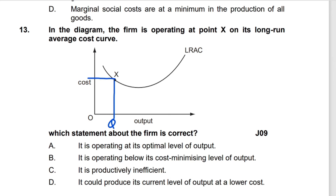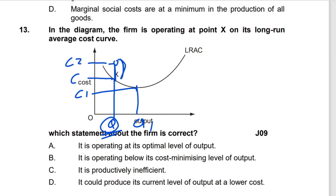Which statement about the firm is correct? Option A says it is operating at its optimum level of output — this is not correct, because optimum is achieved at the point where output is Q1 and average cost is C. Option C says it is productively inefficient — it is not productively inefficient; it is productively efficient, because productive inefficiency would require average cost to be above point X for a given output.